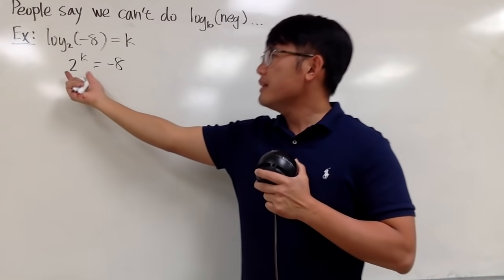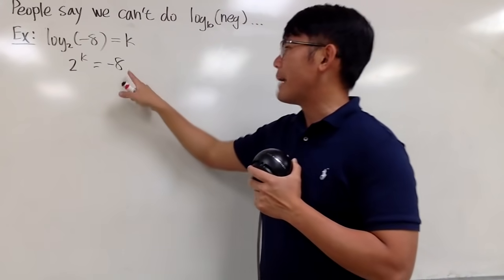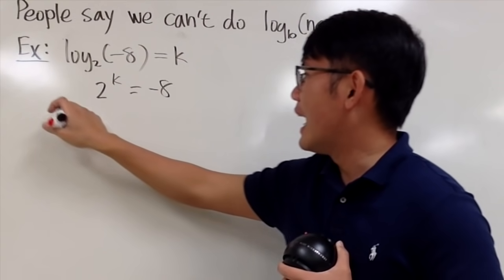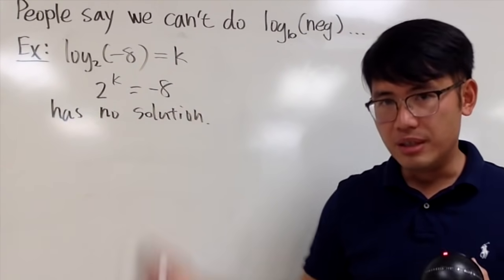But the problem is that the left-hand side is exponential, meaning this is always positive, but on the right-hand side, this is negative 8. It's a contradiction. This has no solution. Therefore, it seems like this didn't make sense.